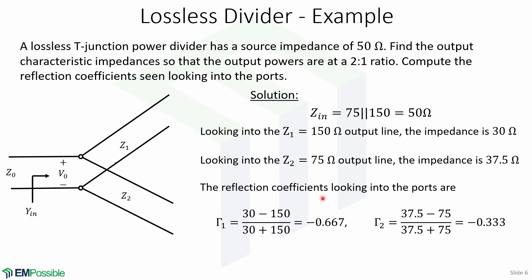Now, the reflection coefficients looking into the ports are for port 1 equals 30 minus 150 over 30 plus 150, which is equal to -0.667. And for port 2, it's equal to 37.5 minus 75 over 37.5 plus 75, and it's equal to -0.333.